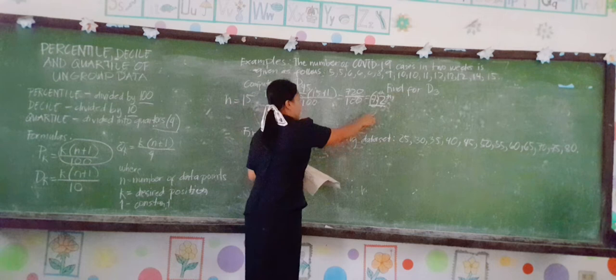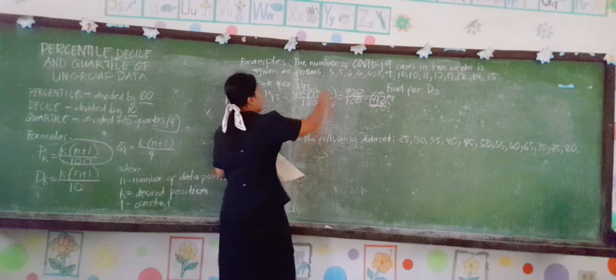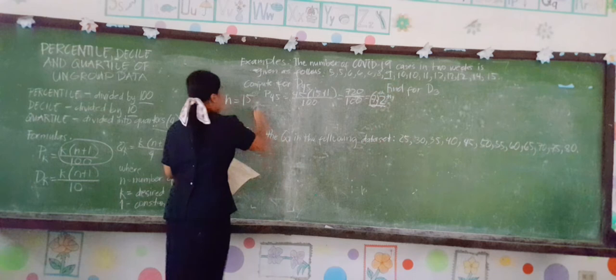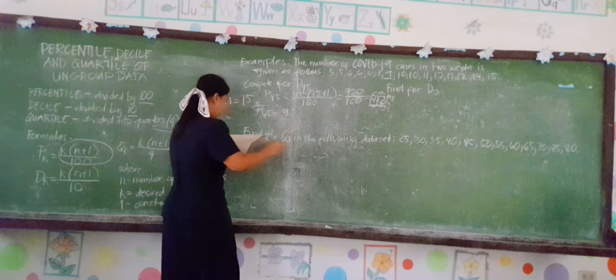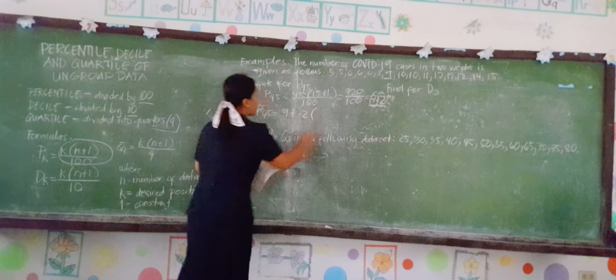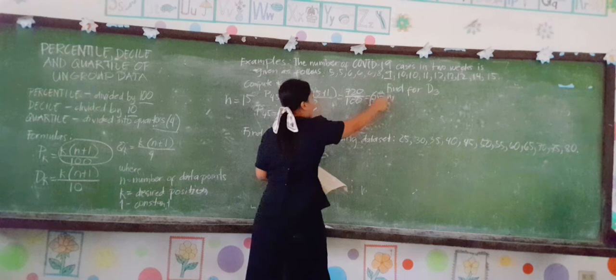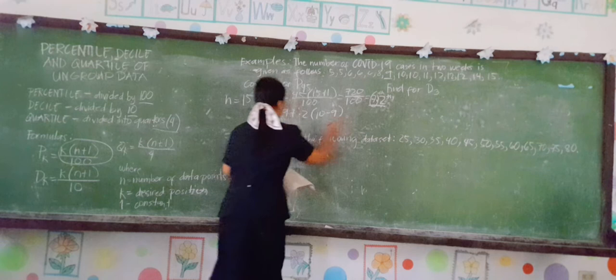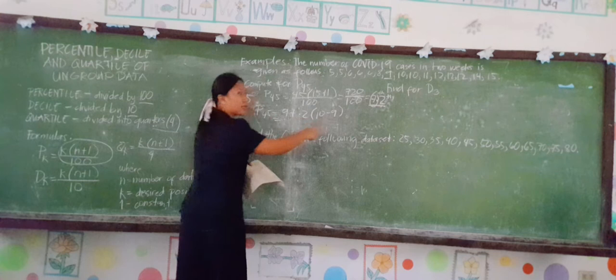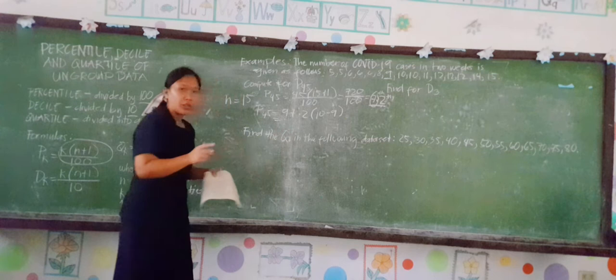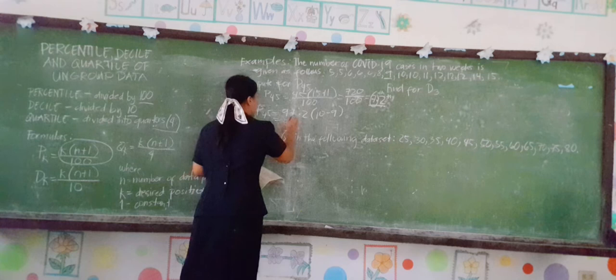We need to interpolate the 0.2. We locate the 7th entry, which is 9. So P45 equals 9 plus 0.2 times (the 8th entry minus the 7th entry), which is 10 minus 9. So 10 minus 9 equals 1, multiplied by 0.2 gives 0.2. Therefore, 9 plus 0.2 equals 9.2.